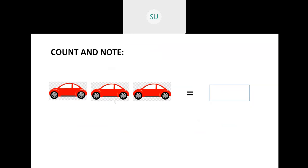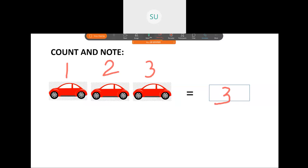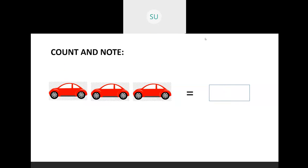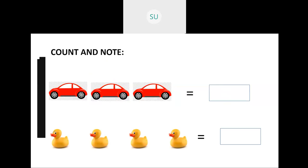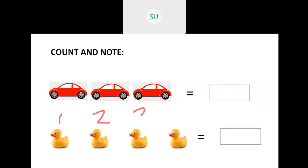Then we did counting. So how many cars are there here? Let's count: 1, 2, 3. So we have 3 cars, so we will write 3 here. Then how many ducks are there? We have 1, 2, 3, and 4. So 4 ducks.